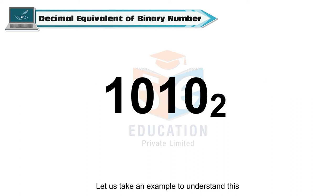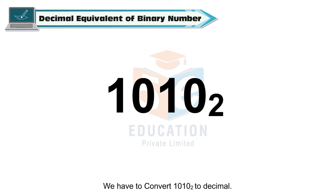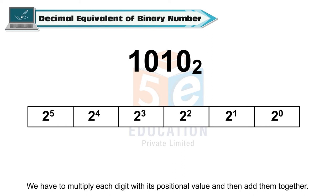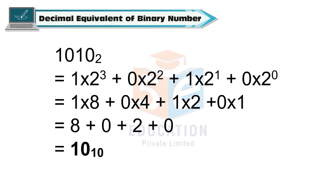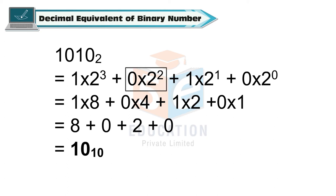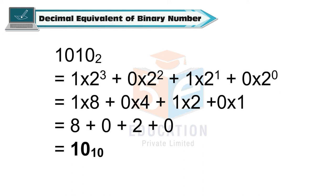Let us take an example to understand this. We have to convert 1010 base 2 to decimal. To calculate this, we first make the equation. We have to multiply each digit with its positional value and then add them together. So, the equation is 1 × 2³ + 0 × 2² + 1 × 2¹ + 0 × 2⁰, which gives us 1 × 8 + 0 × 4 + 1 × 2 + 0 × 1, which is equal to 8 + 0 + 2 + 0 = 10 base 10.